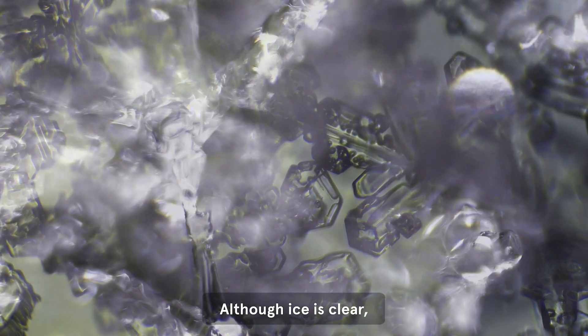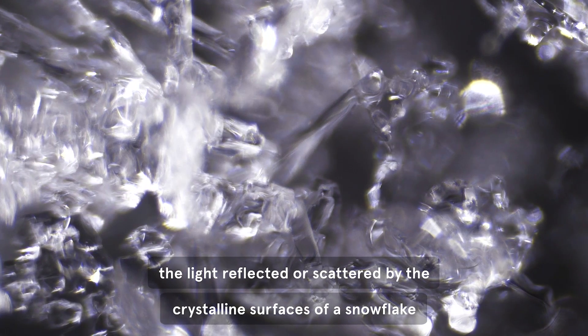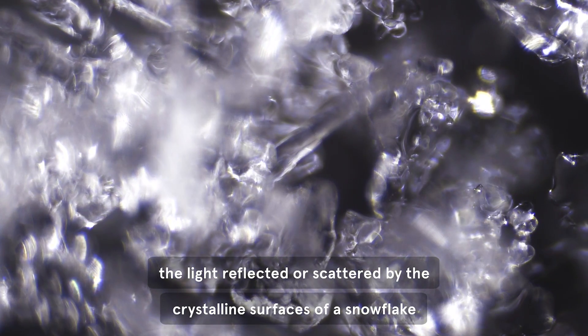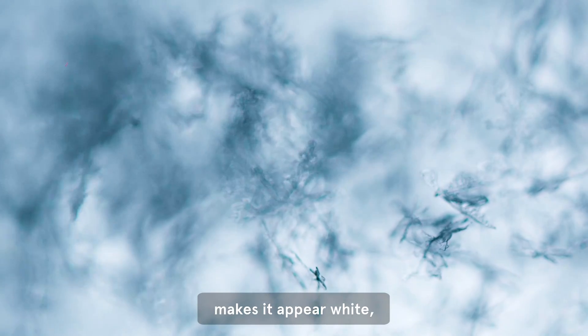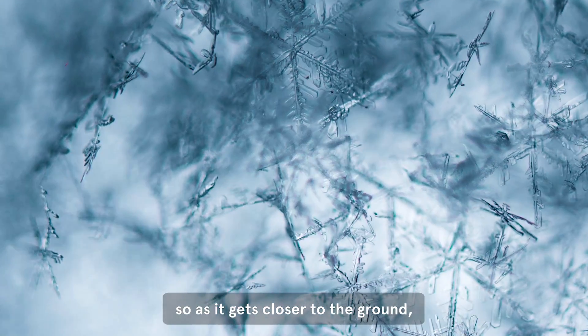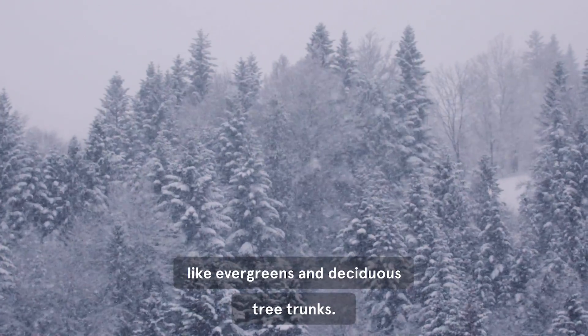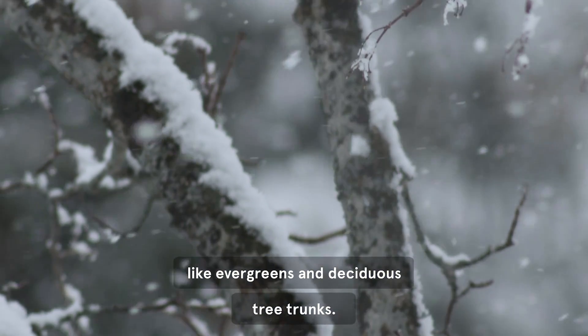Although ice is clear, the light reflected or scattered by the crystalline surfaces of a snowflake makes it appear white. So as it gets closer to the ground, it stands out against dark objects, like evergreens and deciduous tree trunks.